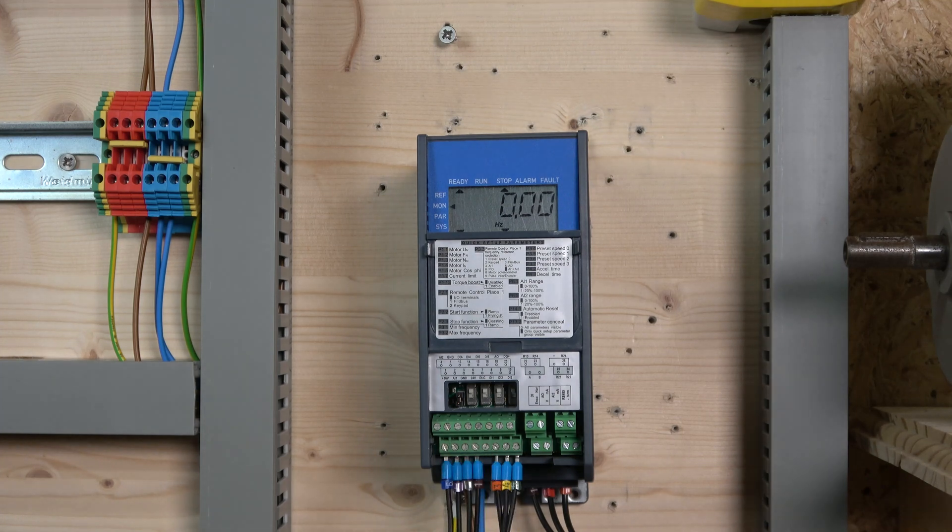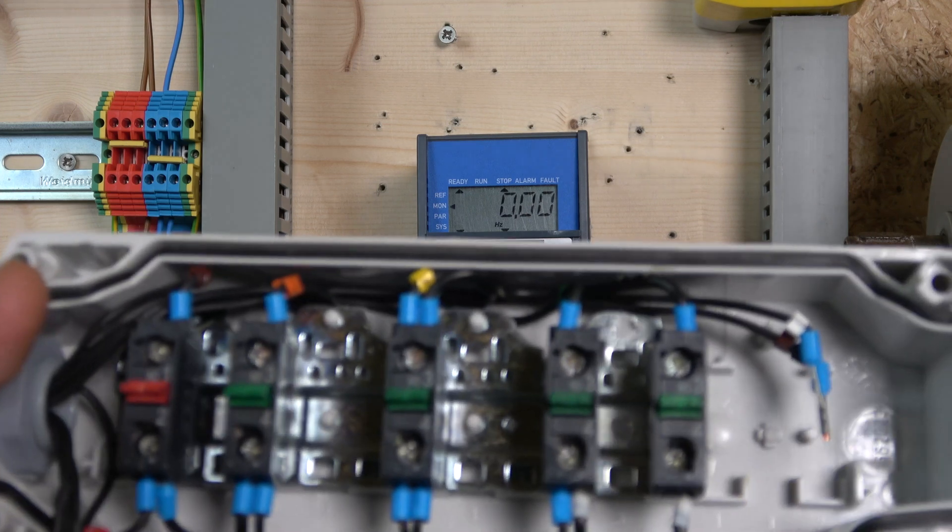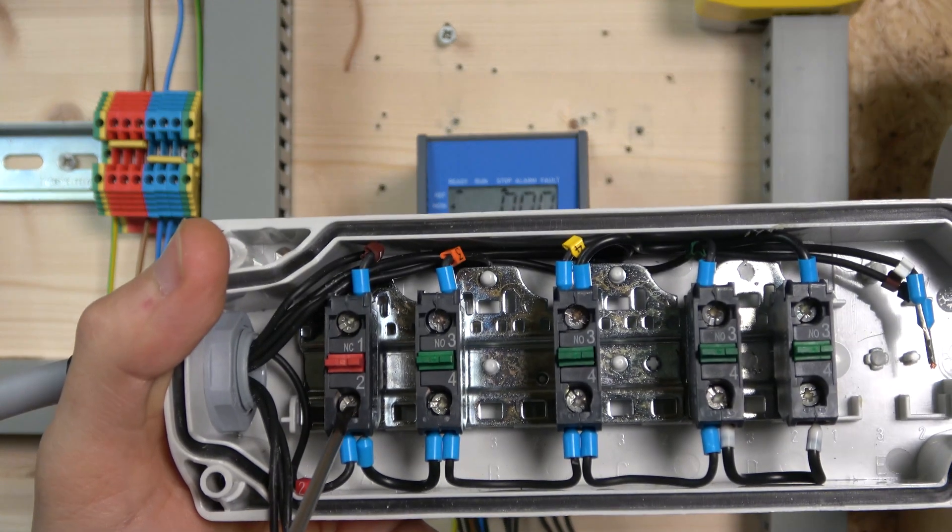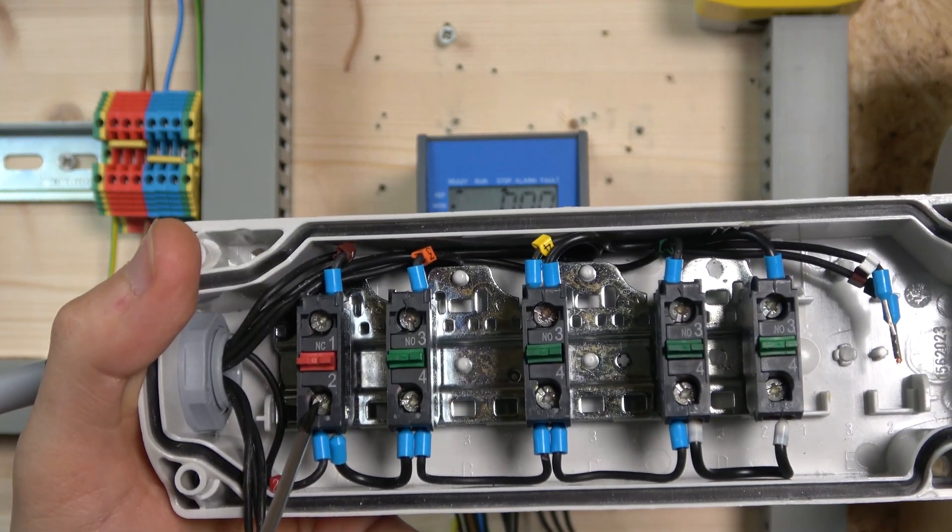To figure out which terminal is which, you have to count them since the numbers aren't clearly marked - a big no-no for me. Terminals one, two, and three are for the potentiometer. The fourth one is a 24-volt signal which goes through the e-stop switch and sends power to all the I/Os here and normally open contacts.